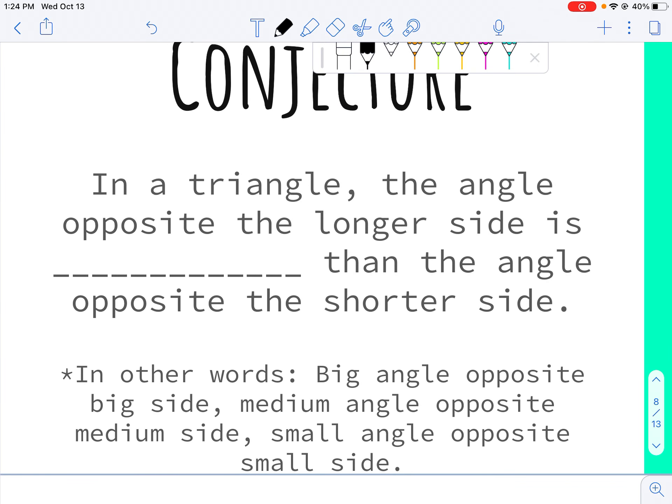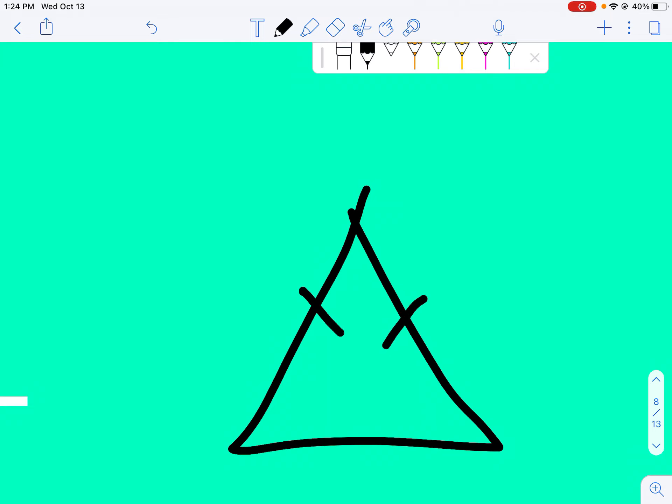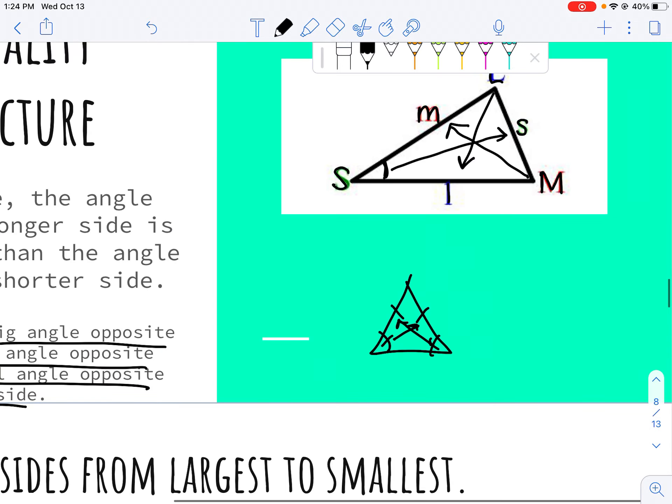So in any triangle, the angle opposite the longer side is greater than the angle opposite the shorter side. In other words, your big angle is across from the big side, medium across from medium, and small across from small. This is why in an isosceles triangle, when you have two sides that are equal, your angles are also equal, because if they're both the medium side, they have to be the same.